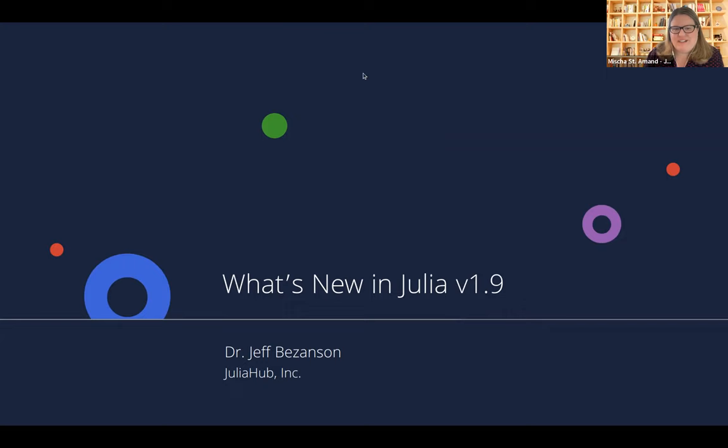I'm the Director of Marketing for Julia Hub, and I'm pleased to be here with Dr. Jeff Bezanson, who is co-founder and CTO of Julia Hub. Jeff is co-creator of the Julia Programming Language, which earned him and his co-creators the J.H. Wilkinson Prize. He earned his doctorate at MIT, and he will be sharing everything new in 1.9 with us today. So Jeff, I'll let you take it away.